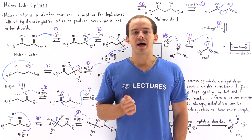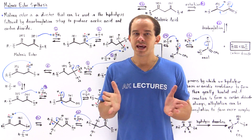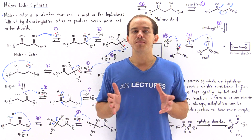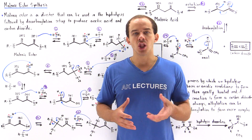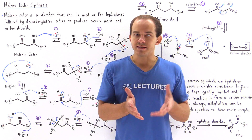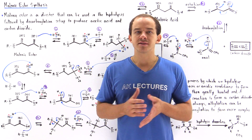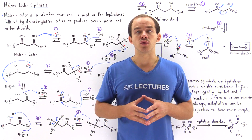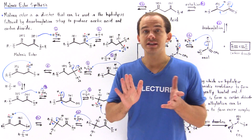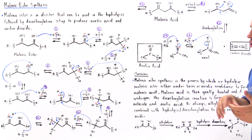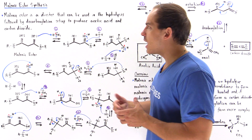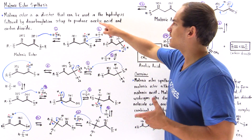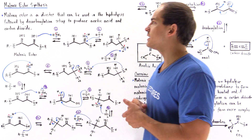Malonic ester is basically a diester. If we take a malonic ester and hydrolyze it, either under acidic or basic conditions, we produce a diacid known as malonic acid. If we gently heat the malonic acid, a decarboxylation reaction will take place and will produce a carbon dioxide molecule as well as acetic acid. This entire process — the hydrolysis and decarboxylation of malonic ester into carbon dioxide and acetic acid — is known as malonic ester synthesis.